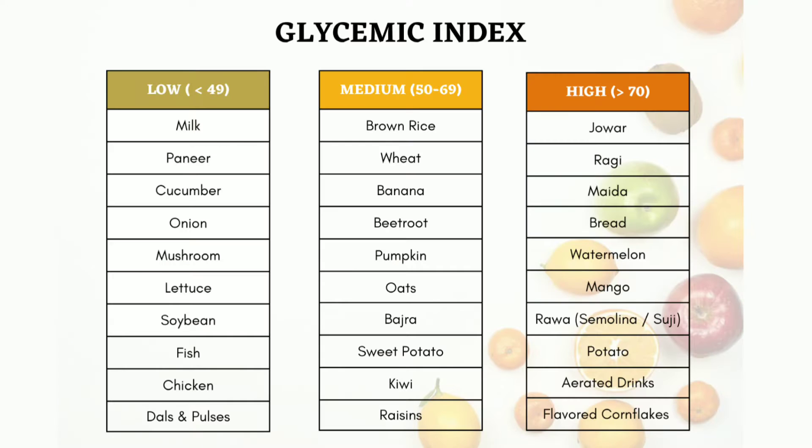For example, watermelon has a glycemic index of 80, which means it falls between 70 to 100 and is technically a high glycemic index food. Whereas foods like brown rice or wheat have a glycemic index ranging between 60 to 70, placing them in the medium GI category. Something like a boiled carrot has a glycemic index of around 39, which falls under low glycemic index foods.